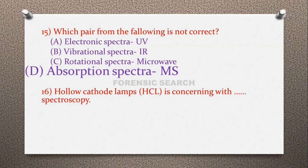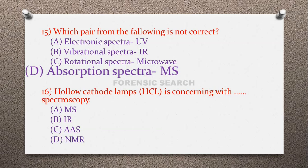Question 16: The hollow cathode lamp (HCL) is associated with which spectroscopy? Option A: mass spectroscopy, option B: IR spectroscopy, option C: atomic absorption spectroscopy (AAS), option D: NMR. The correct answer is option C — the hollow cathode lamp is associated with atomic absorption spectroscopy. It is the source of light used in AAS.